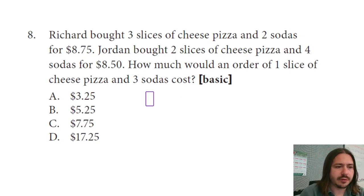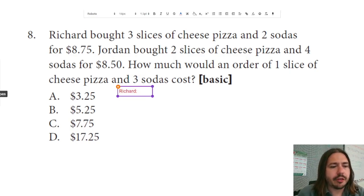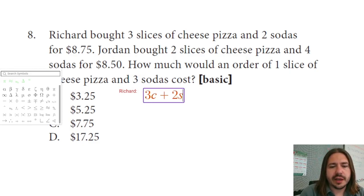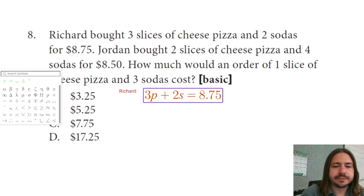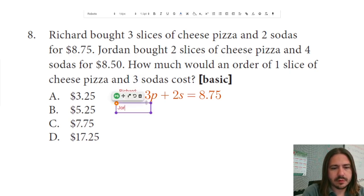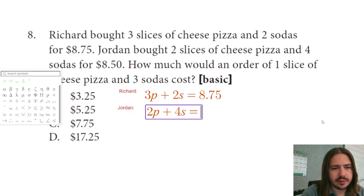So for Richard, we have three slices of cheese pizza — I'm going to call that 3P — plus two sodas, 2S, and that's going to equal $8.75. Then for Jordan, we have two slices of pizza and four sodas for $8.50, so: 2P + 4S = 8.50.